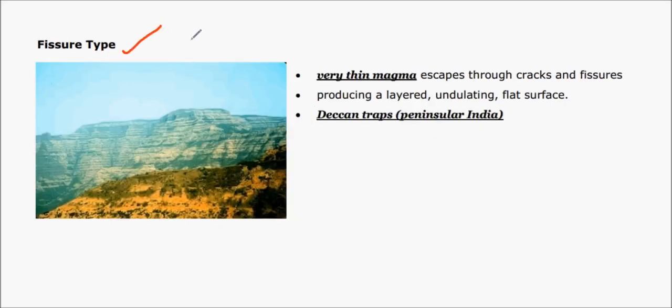The other volcanic type is called fissure type, in which very thin magma flows through fissures and cracks. For example, Deccan Traps were formed due to this kind of volcanic eruption. The volcano simply flows very silently and spreads giving rise to a layered, undulating, flat surface like plateaus.